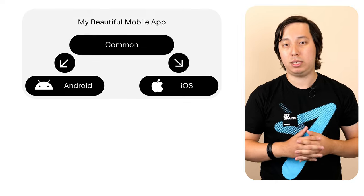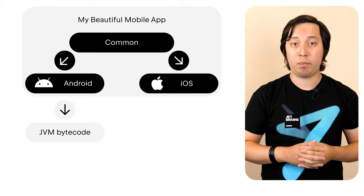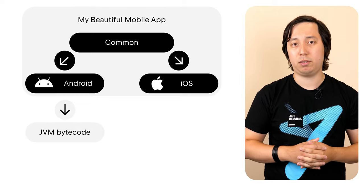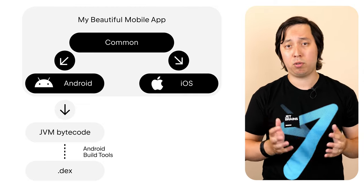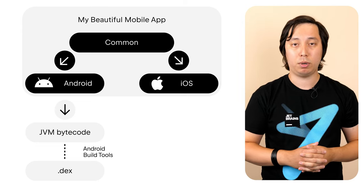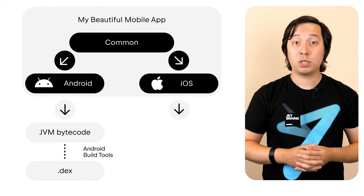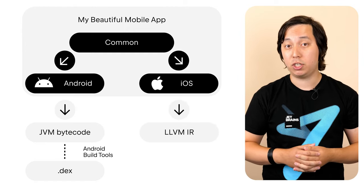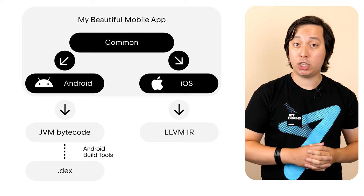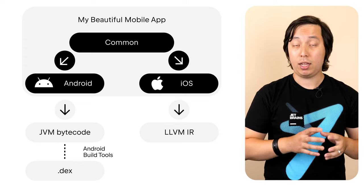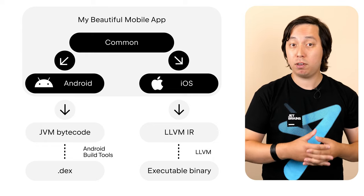For the next very important property of Kotlin Multiplatform Mobile, let's take a look at how it is compiled to executable code. For Android, the Kotlin code will be compiled to JVM bytecode — the same representation as native Android applications use. Then this JVM bytecode will be transformed to DEX and uploaded to the Play Store. For iOS, it's much more interesting. The Kotlin Native compiler will transform Kotlin code to the so-called LLVM IR — LLVM Intermediate Representation — which is the very same representation as the Swift compiler uses. This LLVM IR will then be transformed to a native executable binary using the very same toolchain as Swift applications use.